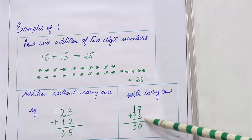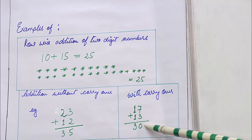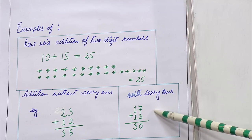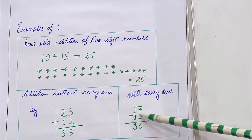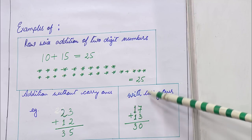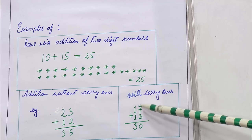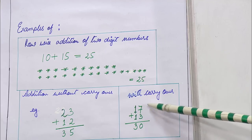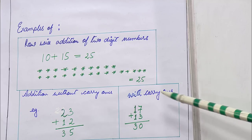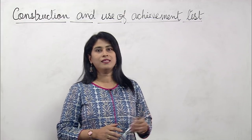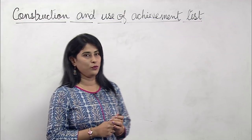In 17 plus 13: 7 plus 3 makes 10, so we write 0 and carry 1 over to the next column. Then 1 plus 1 plus the carryover 1 makes 3, so 17 plus 13 equals 30. Let us see and practice this on the blackboard.